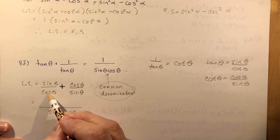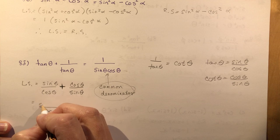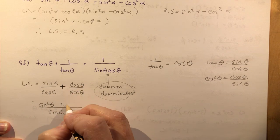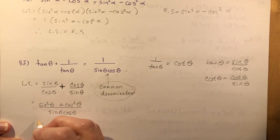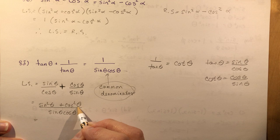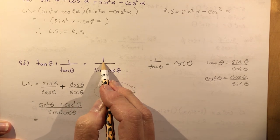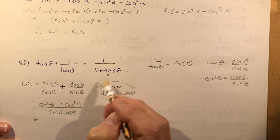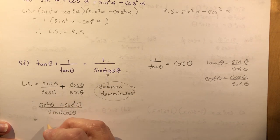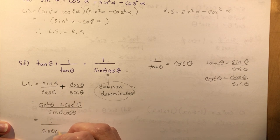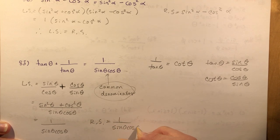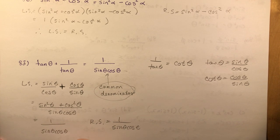Multiplying the first term by sine theta gives sine squared theta over (sine theta cos theta), and multiplying the second term by cos theta gives cos squared theta over (sine theta cos theta). Adding the numerators: sine squared theta plus cos squared theta equals one. So the whole expression equals 1 over (sine theta cos theta), which is the right side. Left side equals right side — therefore, QED.